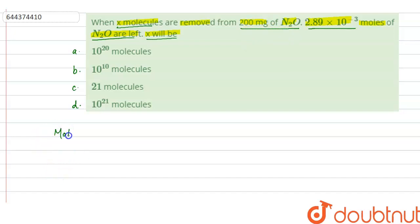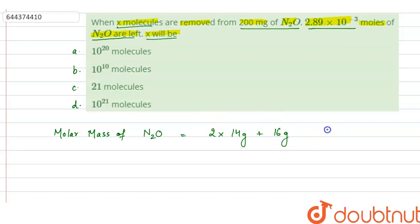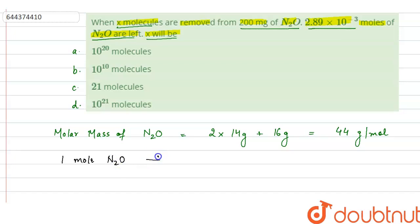So first we find the molar mass of N₂O. We have 2 nitrogen atoms, so 2 × 14 gram, plus 1 oxygen atom with atomic mass 16 gram. So the molar mass equals 44 gram per mole. We know that 1 mole of N₂O contains 6.023 × 10²³ molecules.